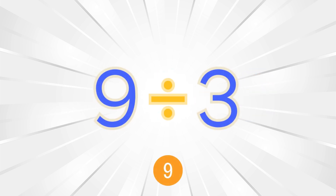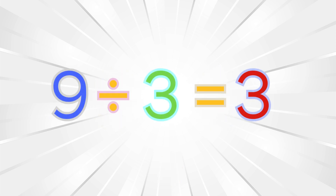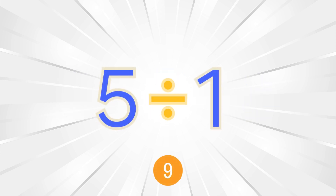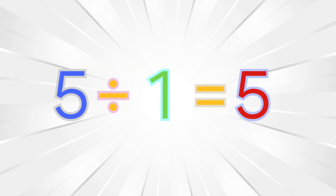Nine divided by three equals three. Five divided by one equals five.